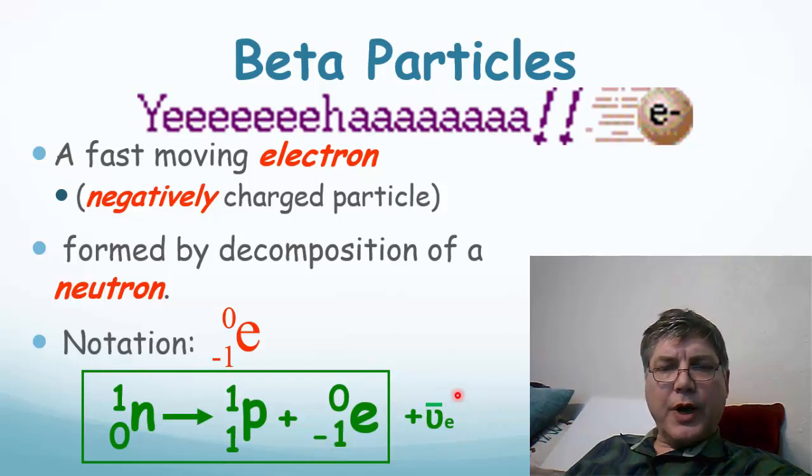There is another particle that comes out during the decay called an antineutrino, which is an antimatter electron neutrino. We're not going to discuss these in this class, but a neutron is its own particle. It does exist independently of protons and neutrons.